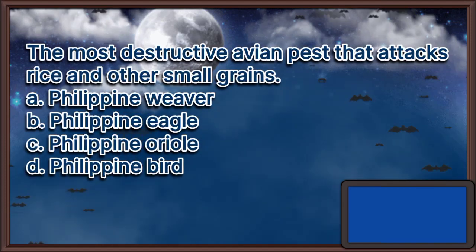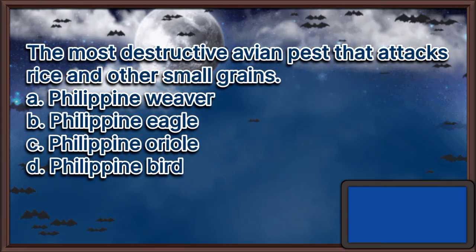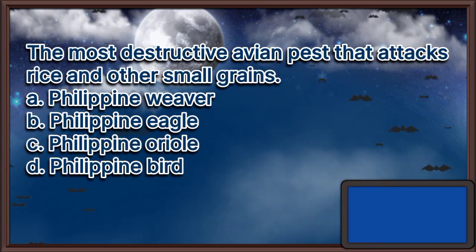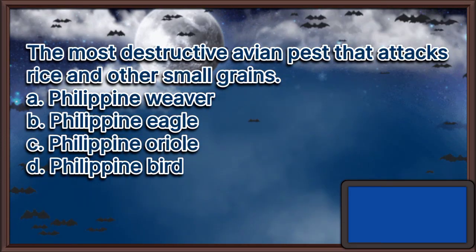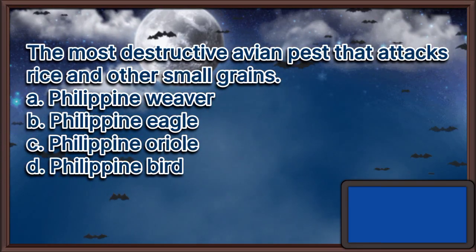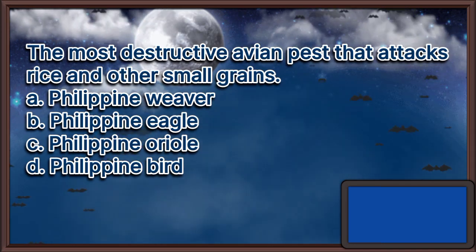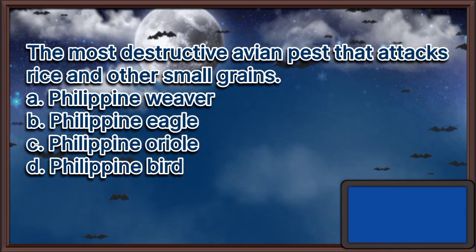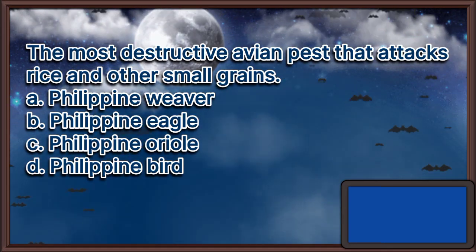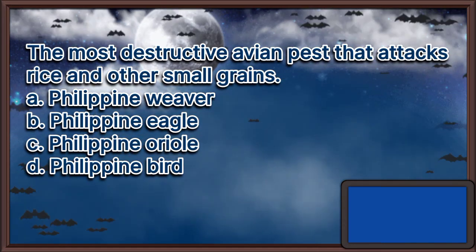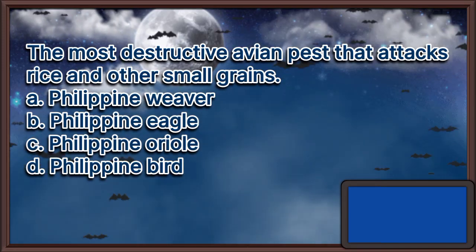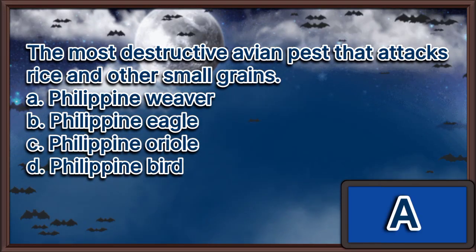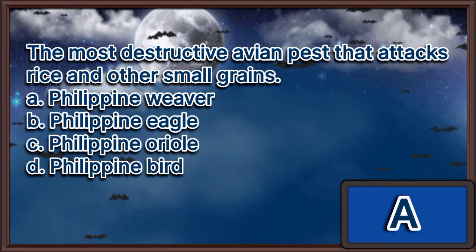The most destructive avian pest that attacks rice and other small grains: A. Philippine weaver, B. Philippine eagle, C. Philippine oriole, D. Philippine bird. The answer is letter A.